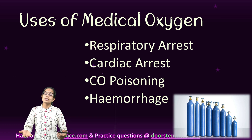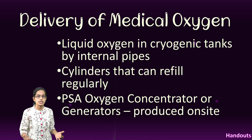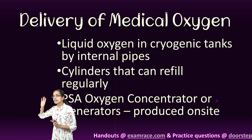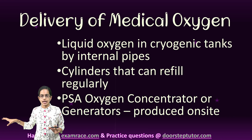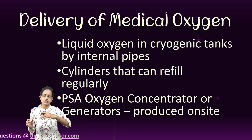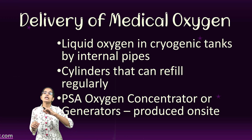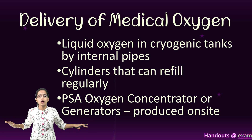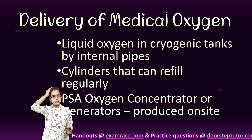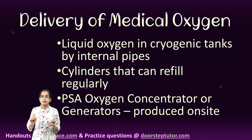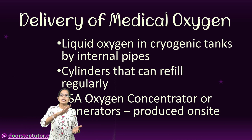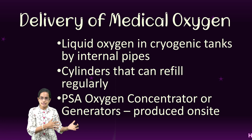Medical oxygen is delivered to individual patients through primarily three ways. First, liquid oxygen is prepared at the site and through cryogenic tanks, this liquid oxygen reaches hospitals through internal pipelines — the whole hospital has the pipeline infrastructure for this. The second way is through cylinders; once the oxygen is consumed, they are sent for refilling, similar to the LPG gas cylinders that we use.